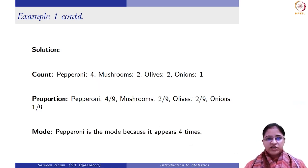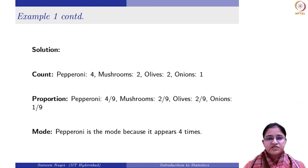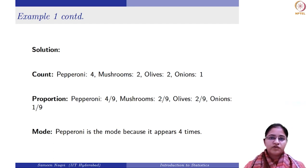Whenever you have collected a categorical data set and have to summarize it, remember you can use either count, proportion, or mode. You cannot use measures like mean or median — they won't make any sense here. That is why, as emphasized last week, distinguishing between numerical and categorical variables is very important. As you move ahead in the course, you will realize that summary measures, visualization techniques, and further analysis all differ for these two types of variables.